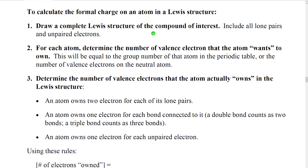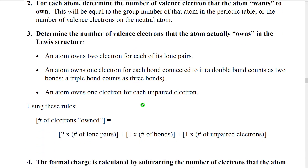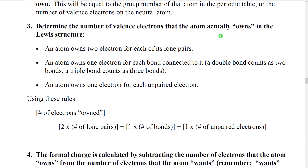Then what we're going to do is look at each atom individually and first determine how many valence electrons does this atom want to own. An atom would like to have for its very own the same number of valence electrons that it started with when it was a neutral atom. For example, we know that carbon starts with four valence electrons before it makes bonds, so a carbon atom would like to own four electrons at the end. When we look at a Lewis structure, because atoms are sharing electrons, they will have octets but they won't really own all of the electrons in that octet.